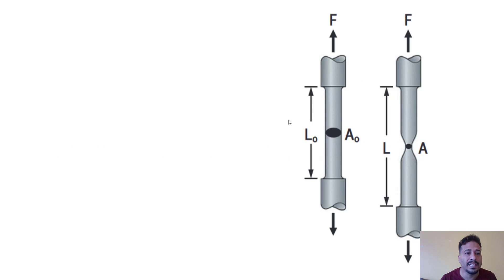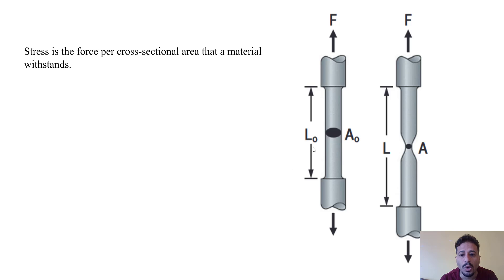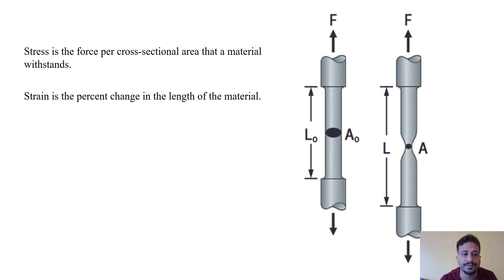Tensile and compressive strength tests are the basic tests for materials to find their engineering stress-strain curve. As you can see here, A0 is the cross-sectional area of the sample and L0 is the length of the sample. In the engineering stress-strain curve, we assume that during the test the area is constant and equal to the initial area A0. Stress is calculated as the force per cross-sectional area that a material withstands, and strain is the percent change in the length of the material.